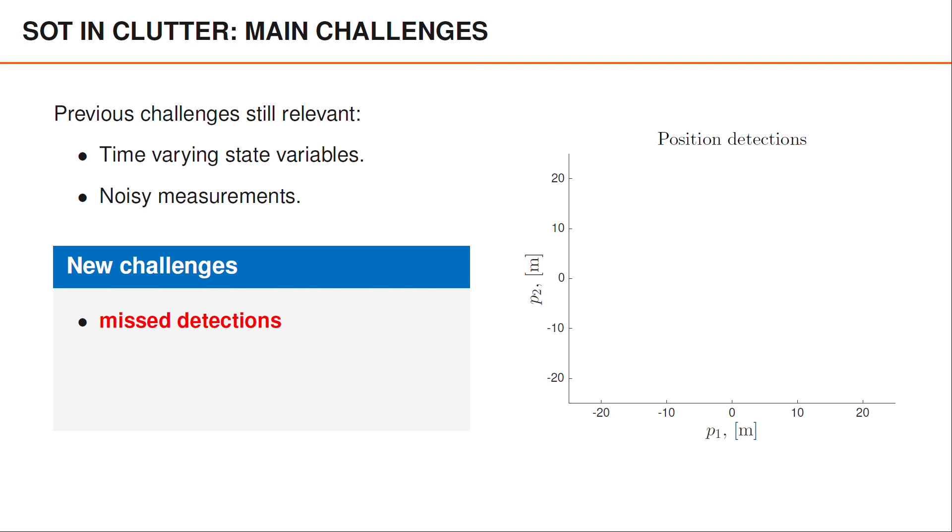Here is an example of what the sequence of measurements might look like under these assumptions. At time 1, 2, 3, and 4, we detect the object. But at time 5, we have a missed detection and do not receive any measurements. Similarly, at time 6, 7, 8, 9, 10, and 11, the object is detected, but we again have a missed detection at time 12.